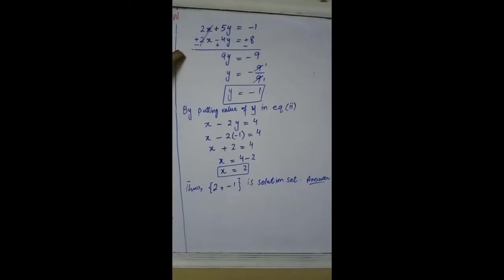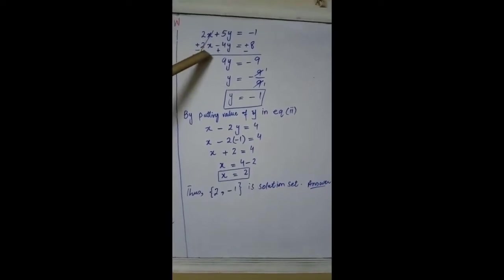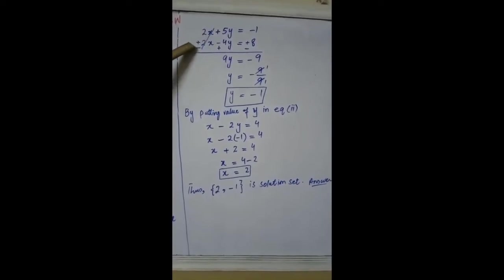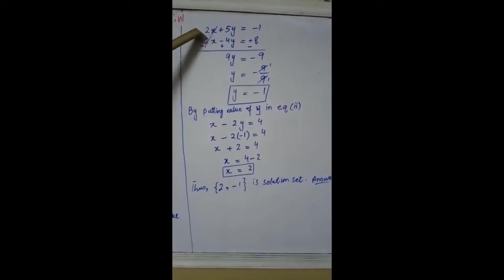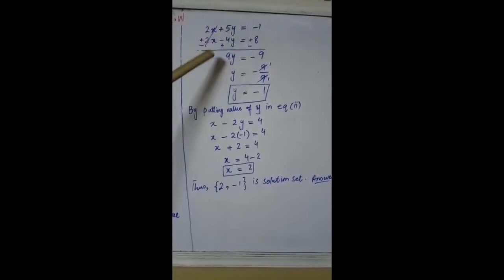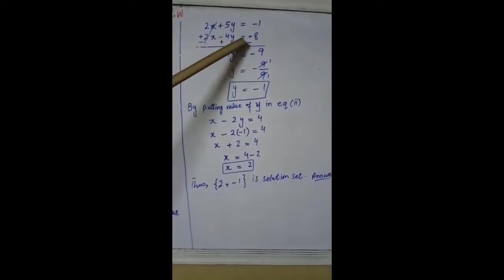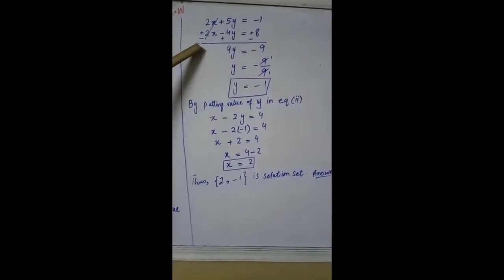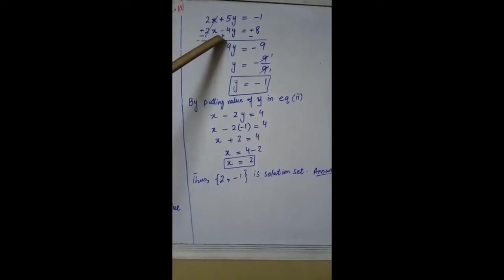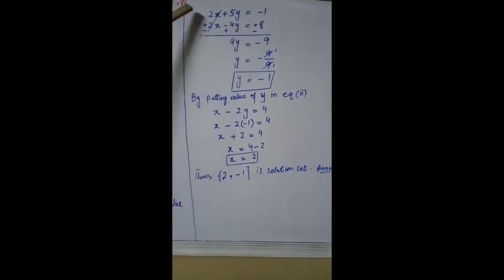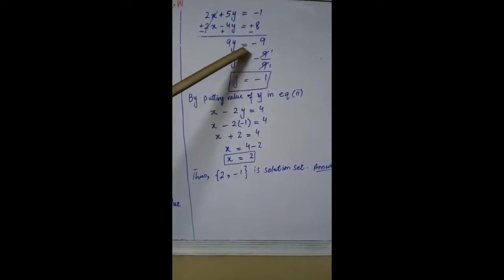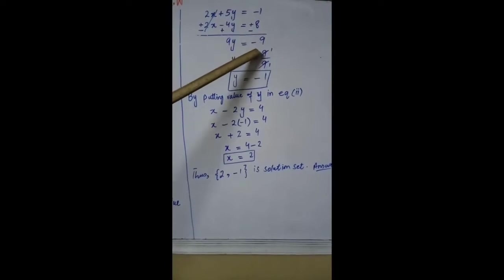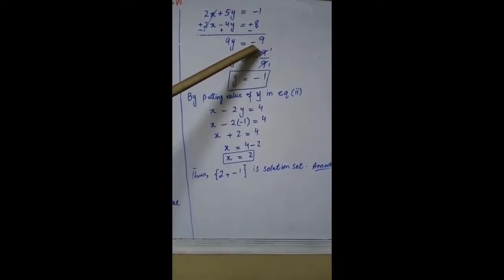Subtract equation 3 from equation 1 to find the value of one variable. When variables have the same coefficient and the same sign, we subtract; when they have different signs, we add the equations. Subtracting 2x - 4y = 8 from 2x + 5y = -1, the signs of the subtracted equation are changed, so 2x cancels, giving 9y = -9.